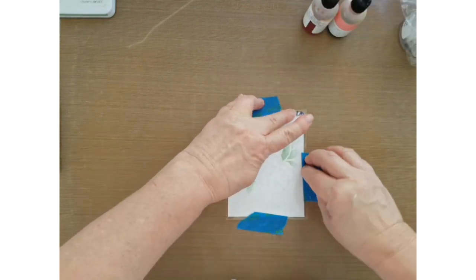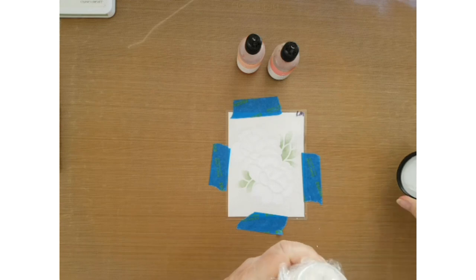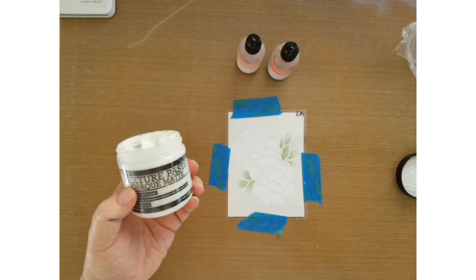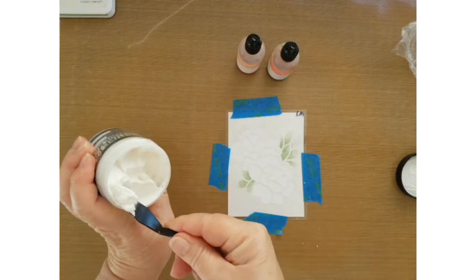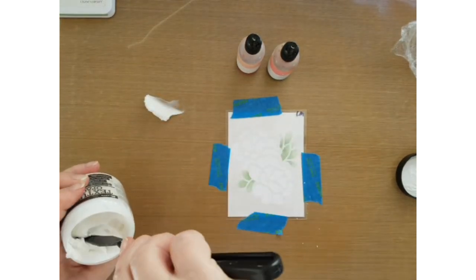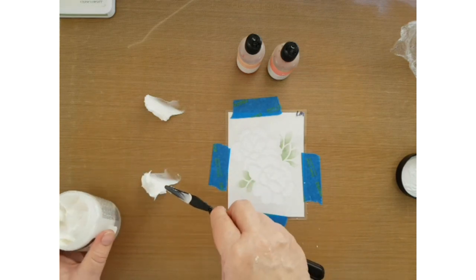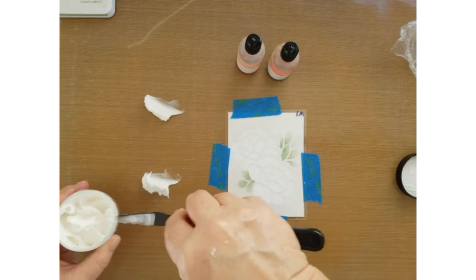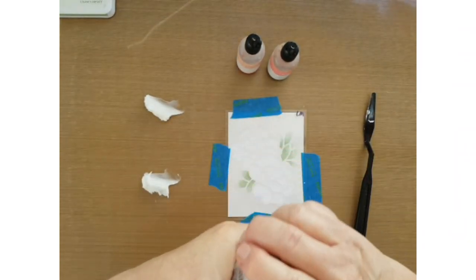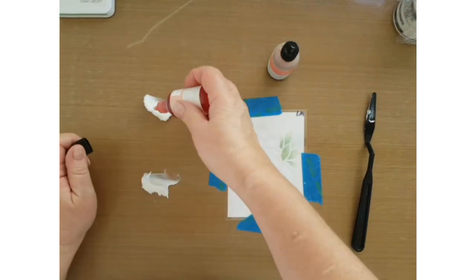Going to use re-inkers with my texture paste: peach and a retired color from my stash called Pixie, using the opaque matte texture paste. I put a bit of glad wrap over it, just really helps to keep it not drying out. I'm just going to use two drops.